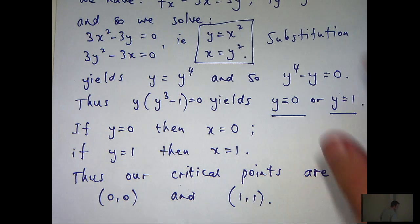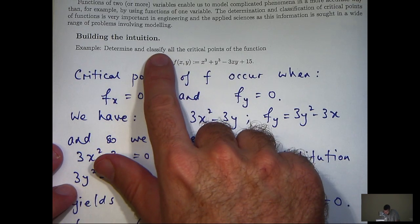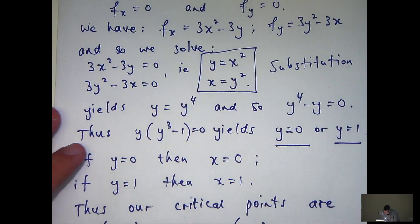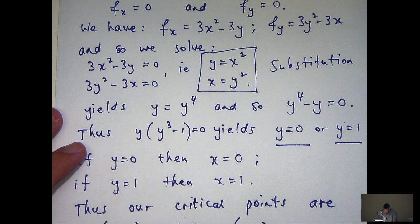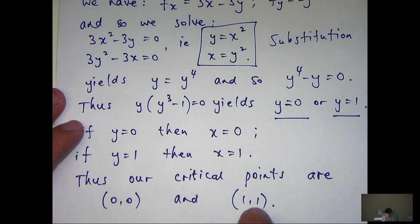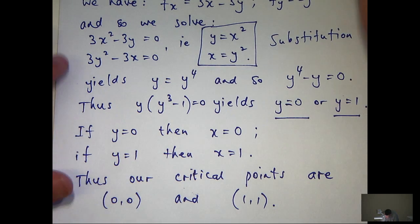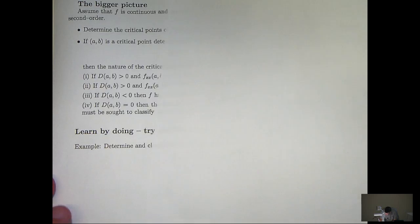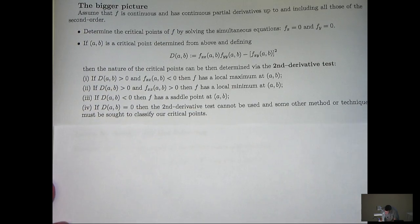The second half involves classifying. Does f have a local max, a local min or a saddle point at this point? And similarly what about this point? Now to do that we're going to classify these critical points. We're going to use an idea called the second derivative test.